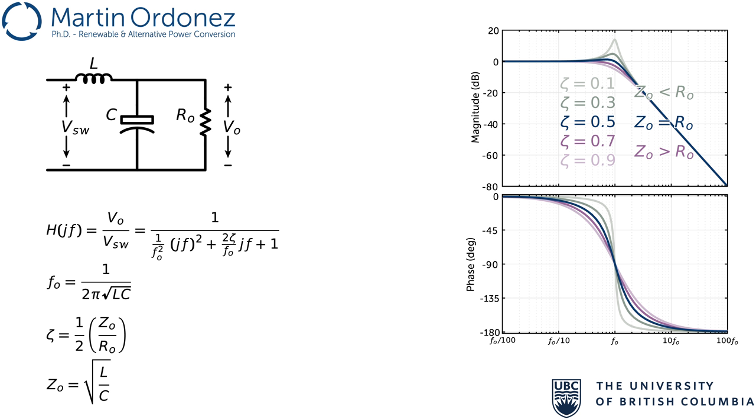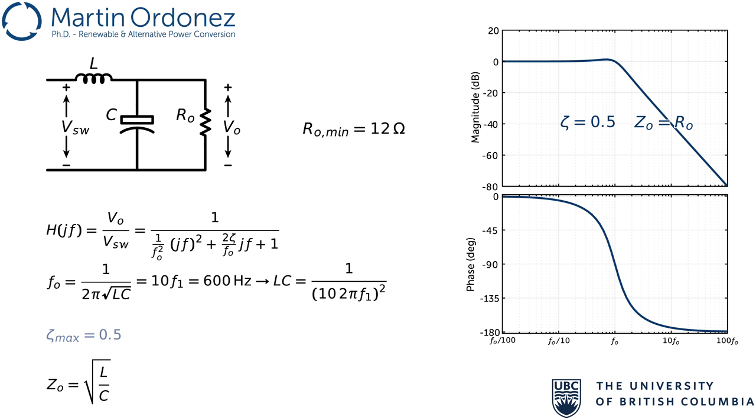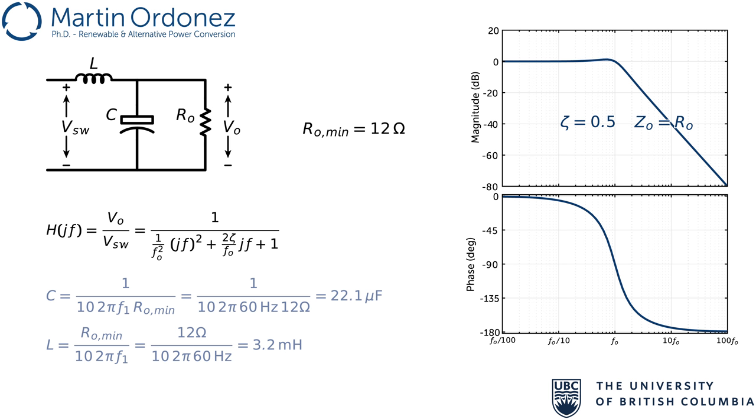To select the values of L and C, one typical criteria is to select F0 as 10 times the line frequency, 600 Hz in this case. So the fundamental frequency is in the area of unit gain for all loads. That makes LC equal to 1 over 2 pi times 600 Hz. To select the damping, it is necessary to define the maximum load, IOMax, for example, 10A. This makes the minimum resistance 12 ohms. Choosing the damping as 0.5, which happens with Z0 is equal to R0, yields L over C equals R min squared. Solving these two equations for L and C, yields C equals 22.1 microfarad and L equals 3.2 mH. These are the components that will make the LC filter.